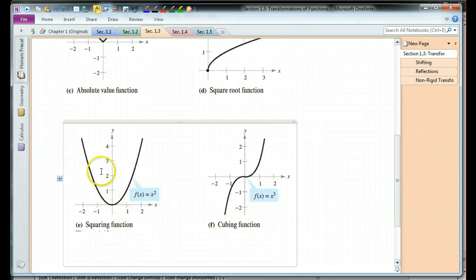Then we have our squaring function, which is our familiar parabola, vertex at 0, 0, and the cubing function. Domain all real numbers, always increasing, passing through the origin.